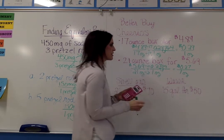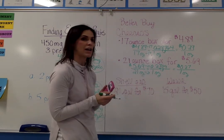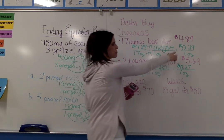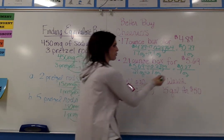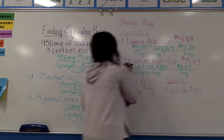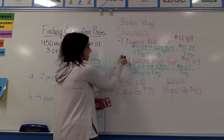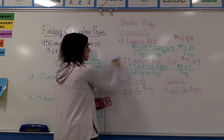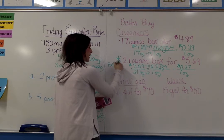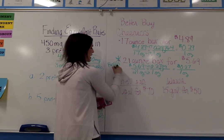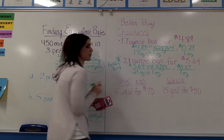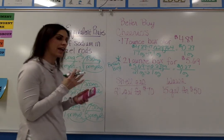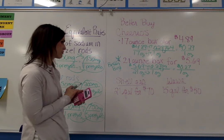$0.27 for one ounce is cheaper than $0.29 for one ounce, so the 21-ounce box is the better buy. In other words, I'm getting more Cheerios for the cost that I'm paying.